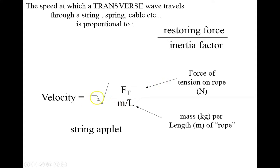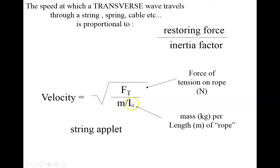Jot this equation down: the velocity of a transverse wave is equal to the square root of the force of tension in that medium divided by the mass per unit length, where m is the mass of the spring and L is the length of the spring, rope, or whatever you're talking about. You can think of this as just the mass per meter — the kilograms per meter of that rope. So velocity equals the square root of F_T over (m/L).